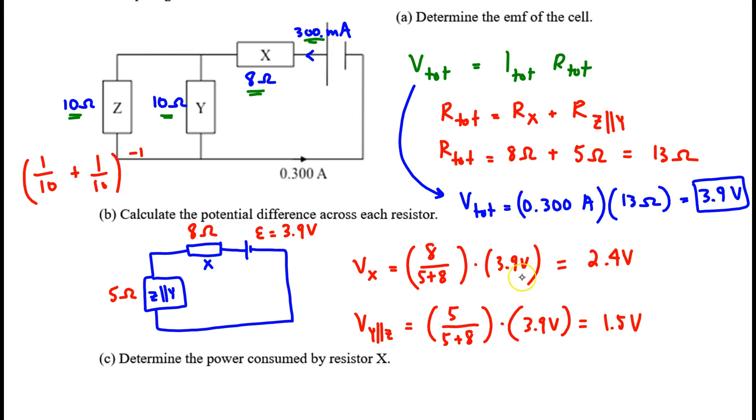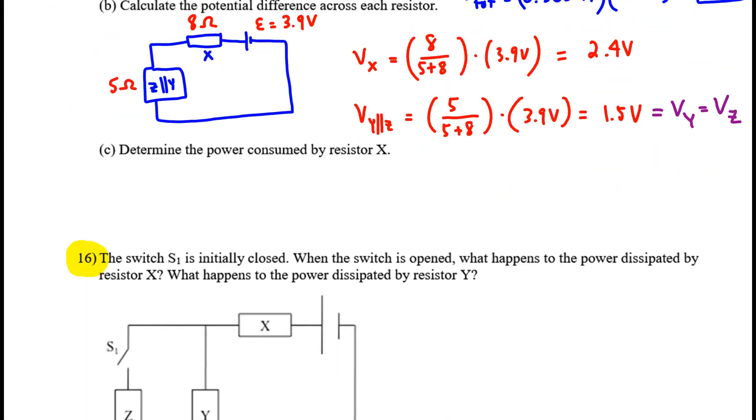So this value, 1.5, is the potential difference across Y and it's the entire potential difference across Z. They each see or experience a potential difference of 1.5 volts. Part C, find the power consumed by resistor X.